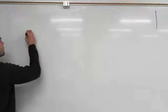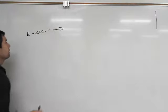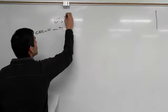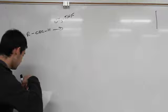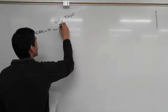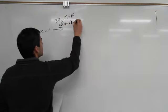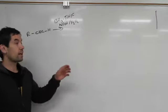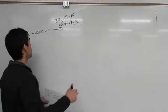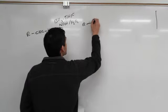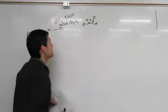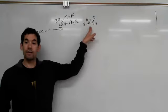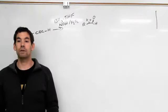One way we can make an aldehyde is to take a terminal alkyne and treat it with BH3, then NaOH and peroxide. We've seen this before — if we take an alkyne and treat it with these conditions, we get the alcohol on the least substituted side. Since we have another pi bond in the alkyne, we're going to form an aldehyde. The internal carbon becomes CH2, and the terminal CH becomes our aldehyde.